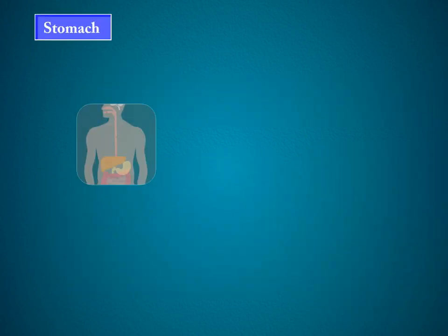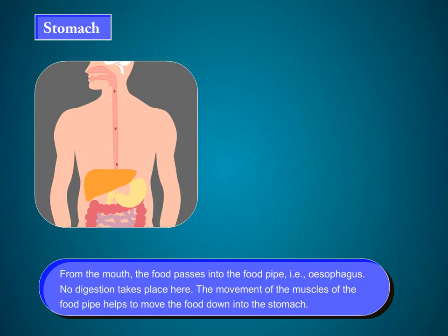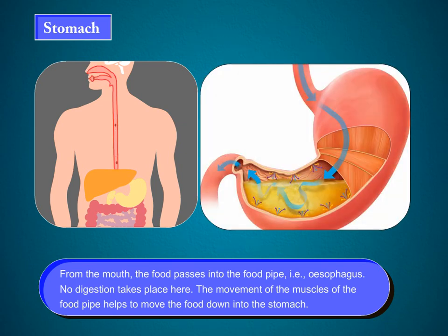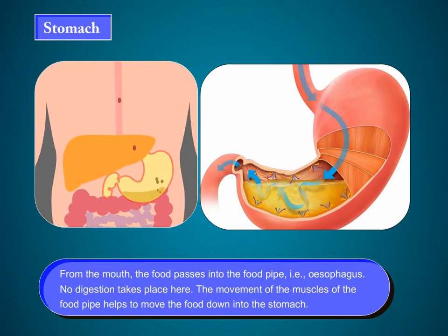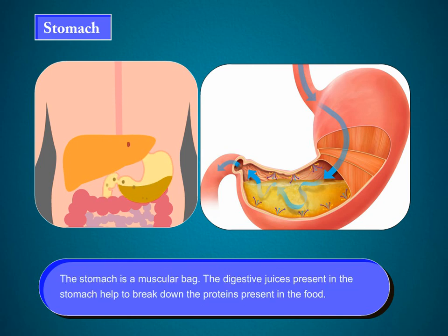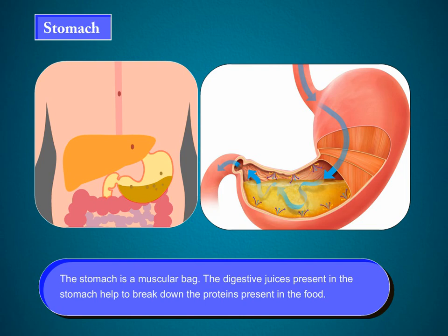Stomach. From the mouth, the food passes into the food pipe, that is, the esophagus. No digestion takes place here. The movement of the muscles of the food pipe helps to move the food down into the stomach. The stomach is a muscular bag. The digestive juices present in the stomach help to break down the proteins present in the food.